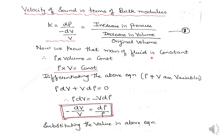We know that the mass of the fluid is constant, given by density times volume equals constant, i.e., ρV = constant. Differentiating: ρ·dV + V·dρ = 0, so ρ·dV = −V·dρ. Rearranging, this gives us −dV/V = dρ/ρ.